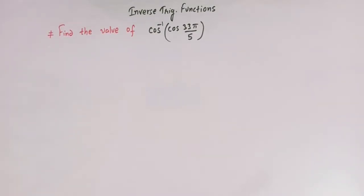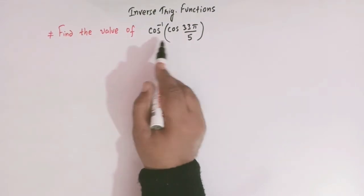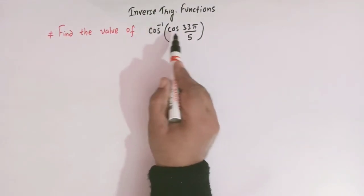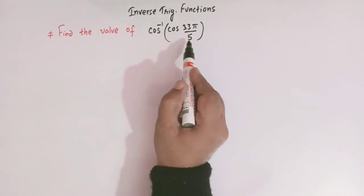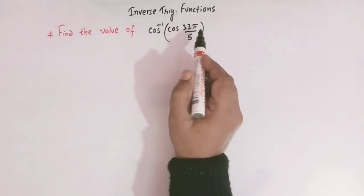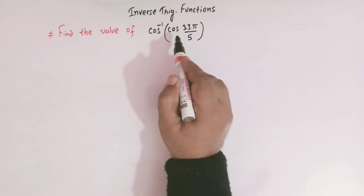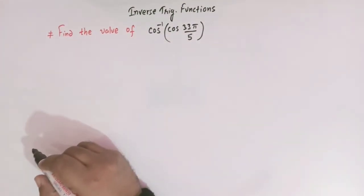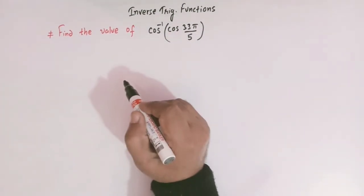Hello viewers. In today's class we are going to solve one important problem from inverse trigonometric functions related to the principal branch of inverse trigonometric functions. The problem is: find the value of cos inverse of cos(33π/5).